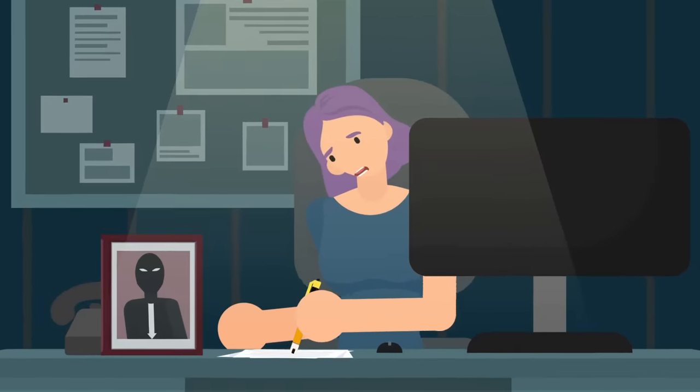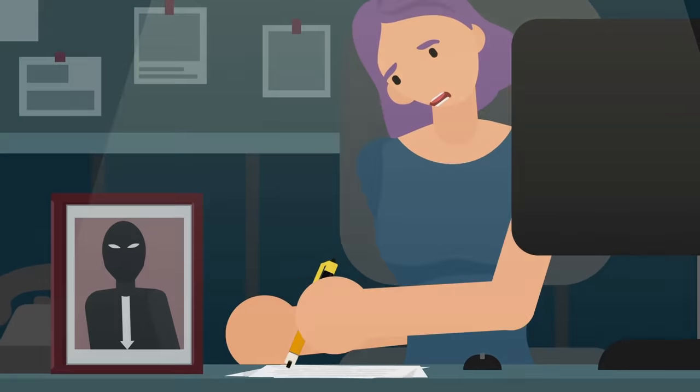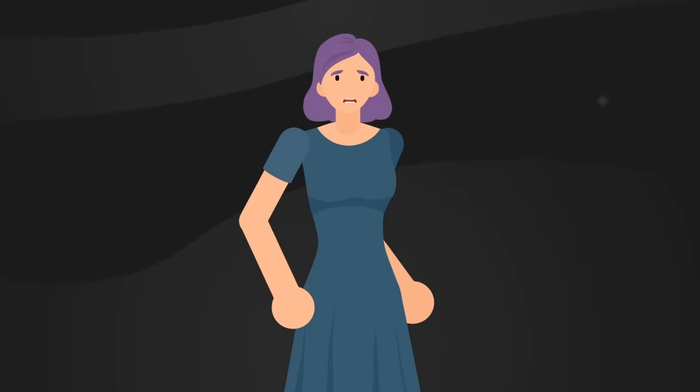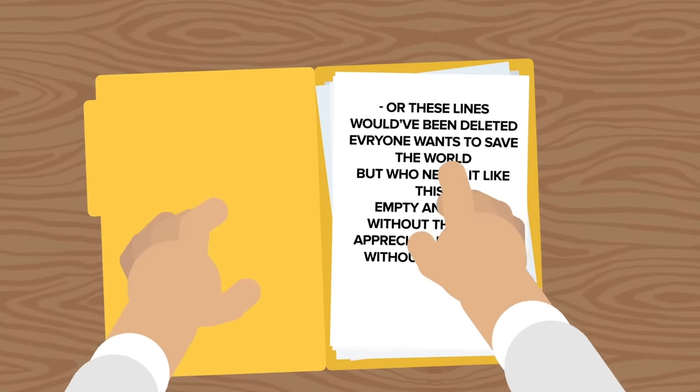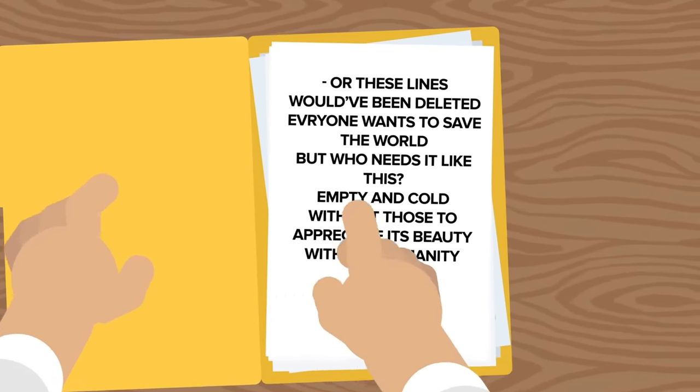Joan says to the PD's O-5-1 that she doesn't care whether they destroy their world or not, or whether the universe will continue to exist, or if there will be new life in it. Her world was crushed long ago. The note also reads the following, It's good that this message is encrypted with your key that was passed on to me, or these lines would have been deleted. Everyone wants to save the world, but who needs it like this? Empty and cold, without those to appreciate its beauty. Without humanity, do whatever you think is right. I truly feel better now. Love you, faithfully yours, Joan Simpson.